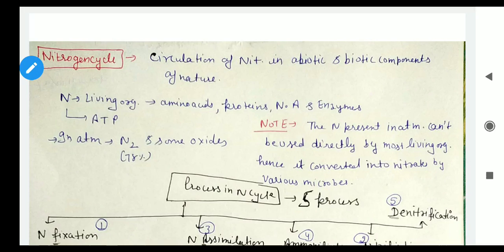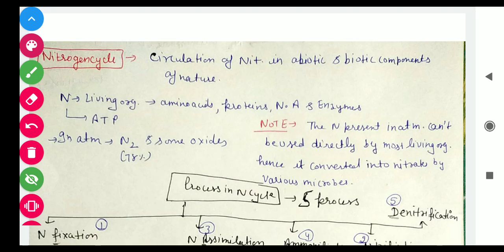Today we are going to discuss the Nitrogen Cycle. What does 'cycle' mean? Cycle means repeat again and again. Nitrogen Cycle means the circulation of Nitrogen. Nitrogen is an abiotic component of nature, and there are also biotic components. So the Nitrogen Cycle means the circulation of Nitrogen in the abiotic and biotic components of nature.